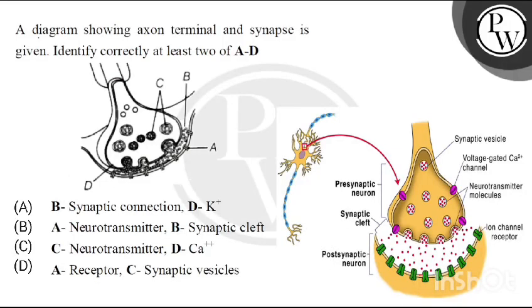Hello children, let's read this question. A diagram showing axon terminal and synapse is given. Identify correctly at least two of A to D.